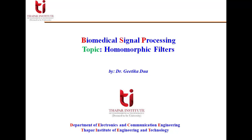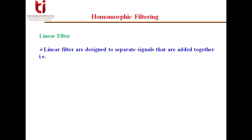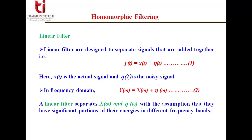This is called generalized linear filtering or homomorphic filtering. Linear filters are designed to separate signals which are added together. If we have signal y(t) as a combination of x(t) and η(t), where x(t) is the actual signal and η(t) is the noise, our goal is to extract x(t). In the frequency domain, Y(ω) = X(ω) + η(ω), and we can apply a linear filter to separate X(ω) and η(ω), assuming their energies lie in different frequency bands.